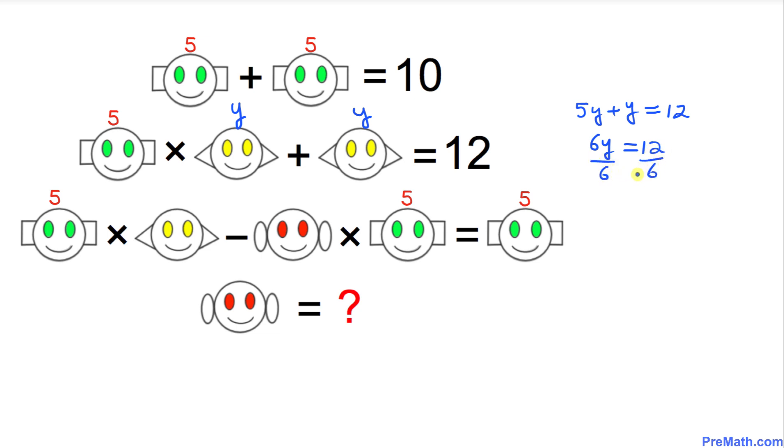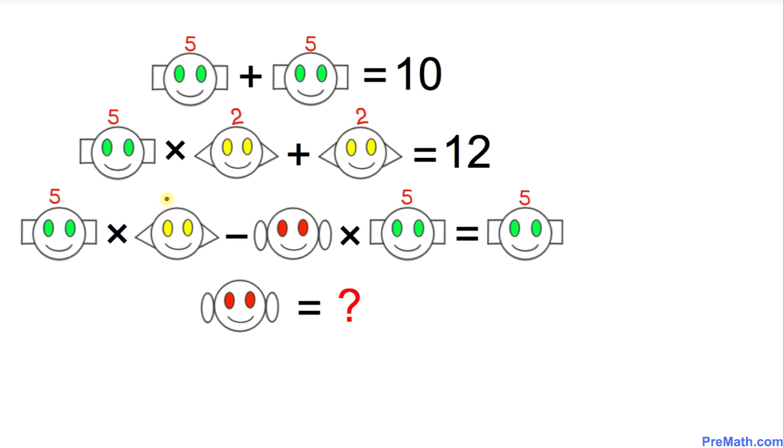So the value of this yellow happy face turns out to be 2. Wherever we see the yellow happy face, I am going to mark that one with the value 2. Now let's focus on our third equation.